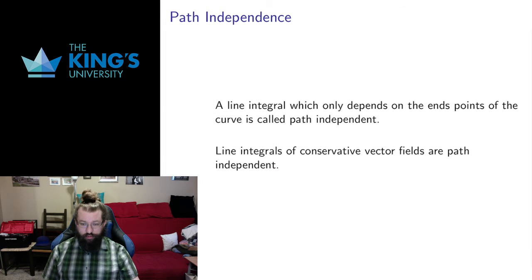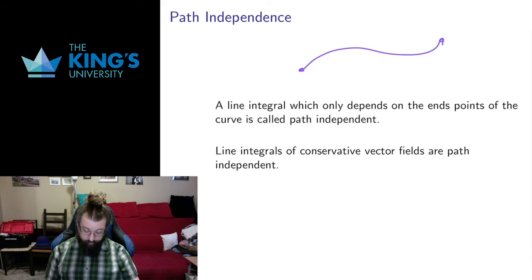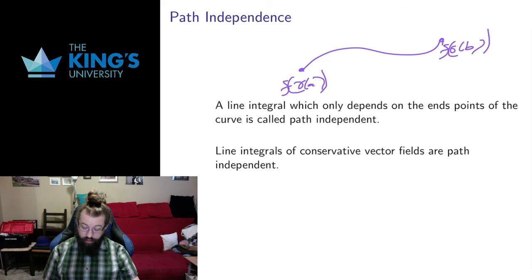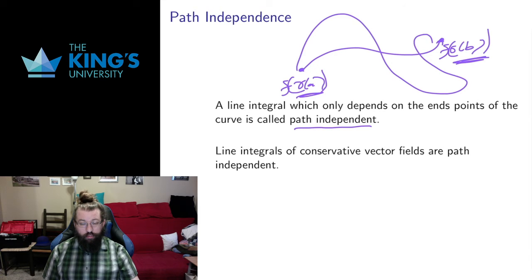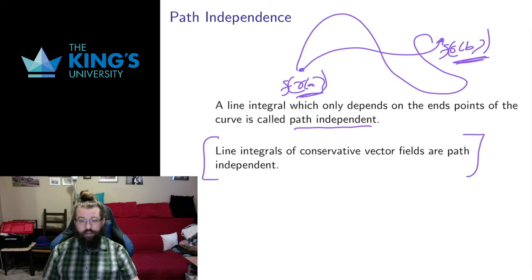Let me talk about the implications. If I have a conservative vector field and integrate over a parametric curve going from gamma of a to gamma of b, all that matters on the right side is the potential at gamma of b minus the potential at gamma of a. The points in the middle didn't matter at all — I could have taken any path and still gotten f of gamma of b minus f of gamma of a. A line integral which only depends on the endpoints is called path independent. It doesn't matter how complicated the path is; all that matters are the endpoints. The fundamental theorem of line integrals says that line integrals of conservative vector fields are path independent.